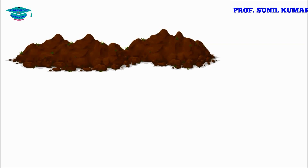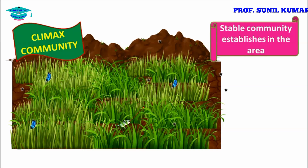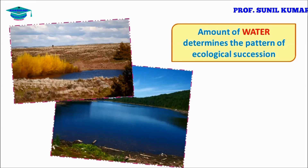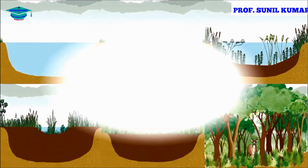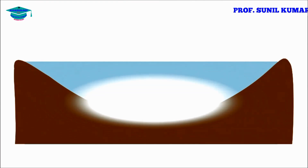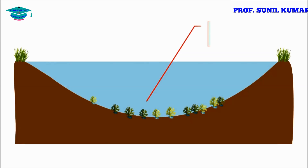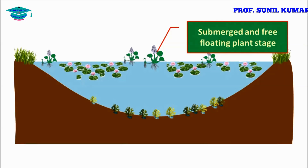When more water is present in the area, hydrarch succession occurs; when there is no water, xerarch succession occurs in desert conditions. In hydrarch succession, water is present in abundance, so phytoplankton starts growing. This leads to the submerged plant stage, which then provides opportunity for submerged and free-floating plant stage.